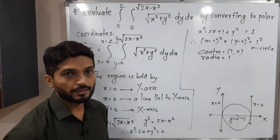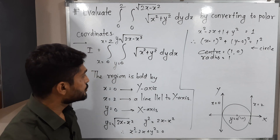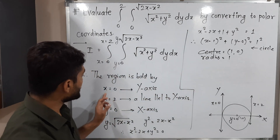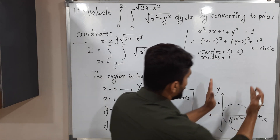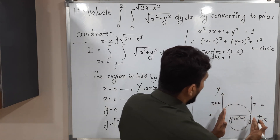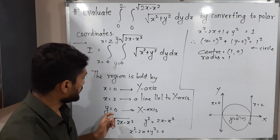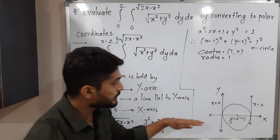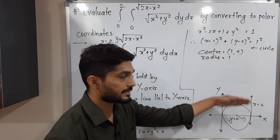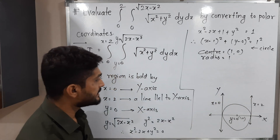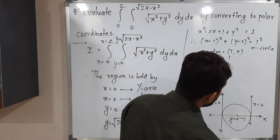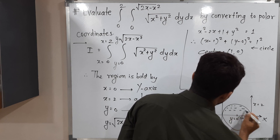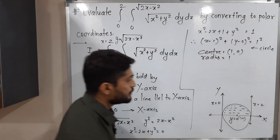The region is bounded by X = 0 and X = 2, lies between these two parallel lines, is bounded below by the X-axis, and bounded above by the circle. So this is our region of integration. We have to solve the double integration over that region, converting the problem to polar coordinates.